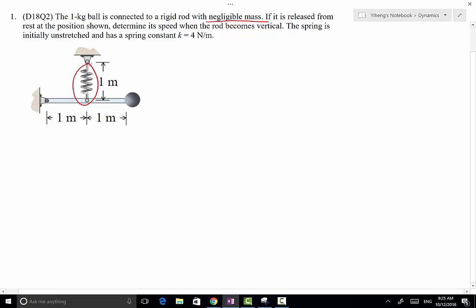So the unstretched length of the spring is 1 meter, and we need to determine the speed of this ball when the rod becomes vertical. So this is our initial state. Let's call it state 1.